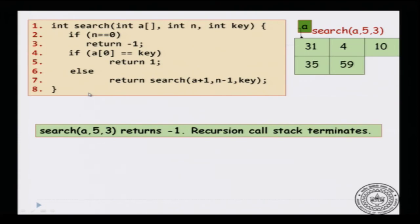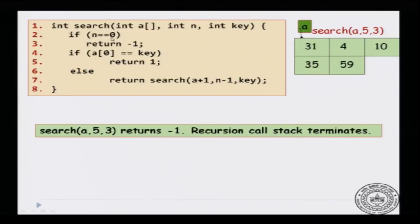Even in this problem, when we called search(A+5, 0, 3), the function terminated because we had a base case: if n equals 0, return minus 1. Without that base case, the function would go on calling itself an infinite number of times. Just like infinite loops in for/while loops, recursion can produce infinite recursion, and the only way to guard against that is to get the base case correct.